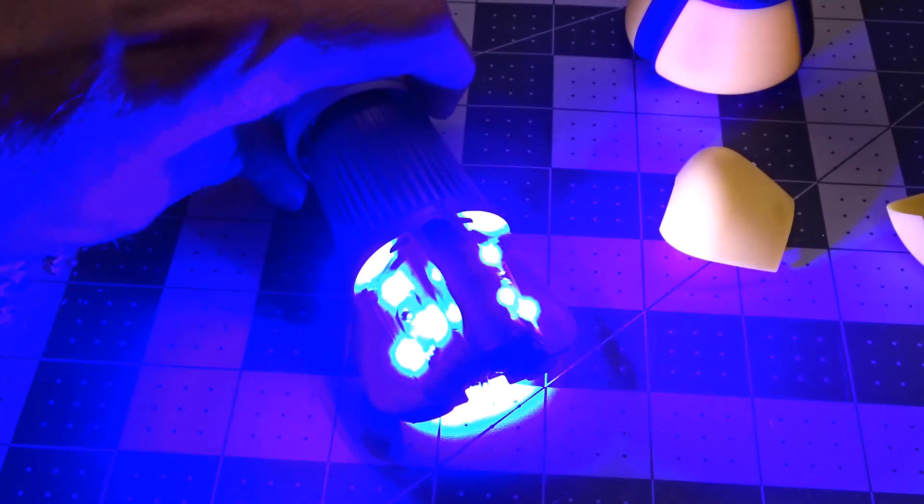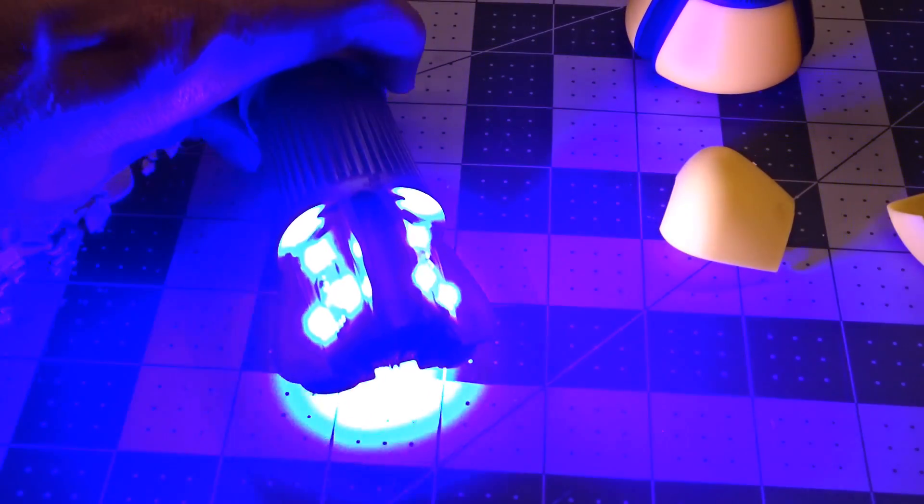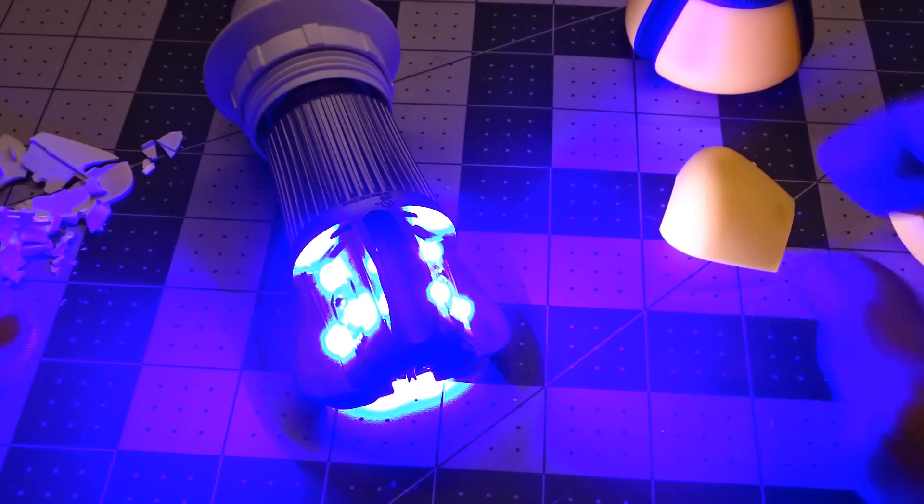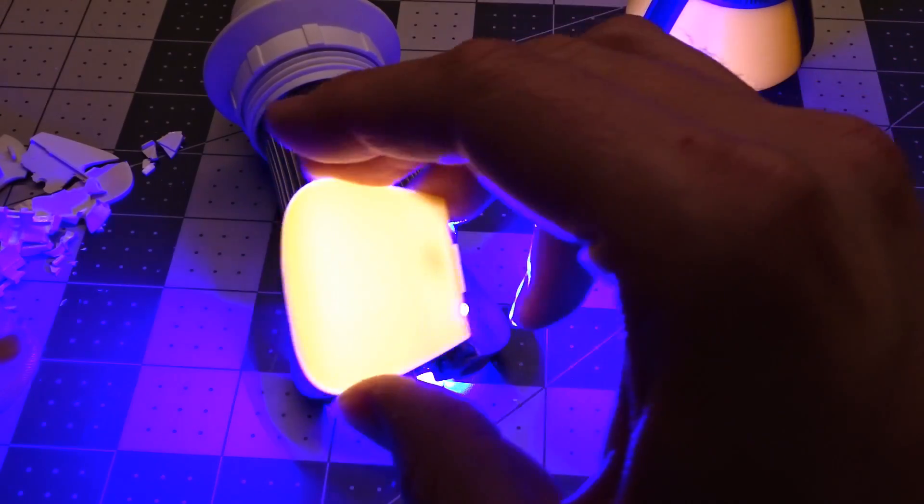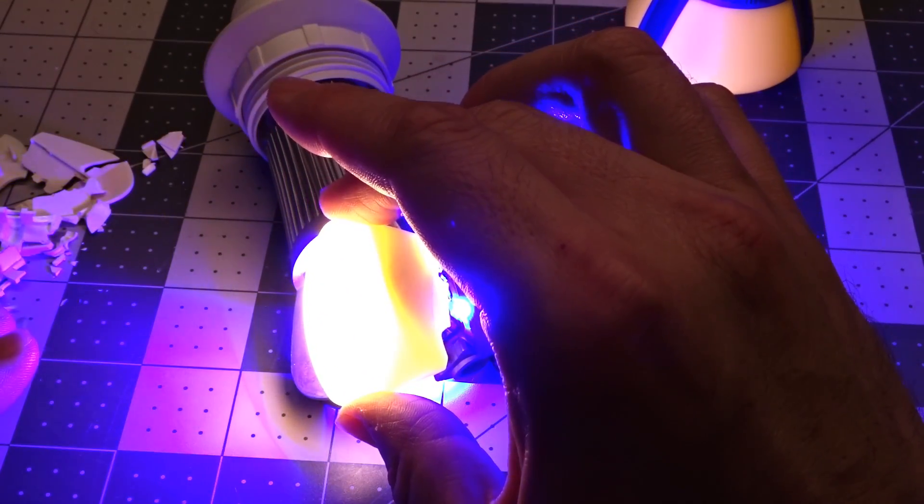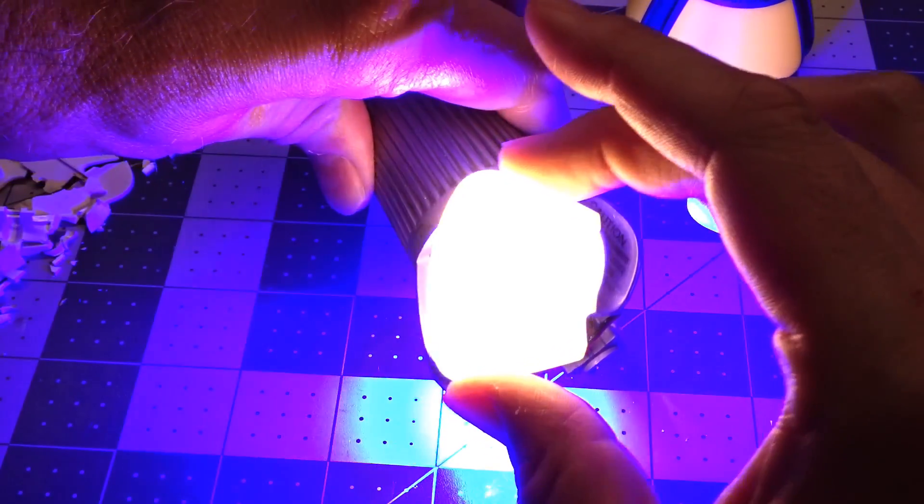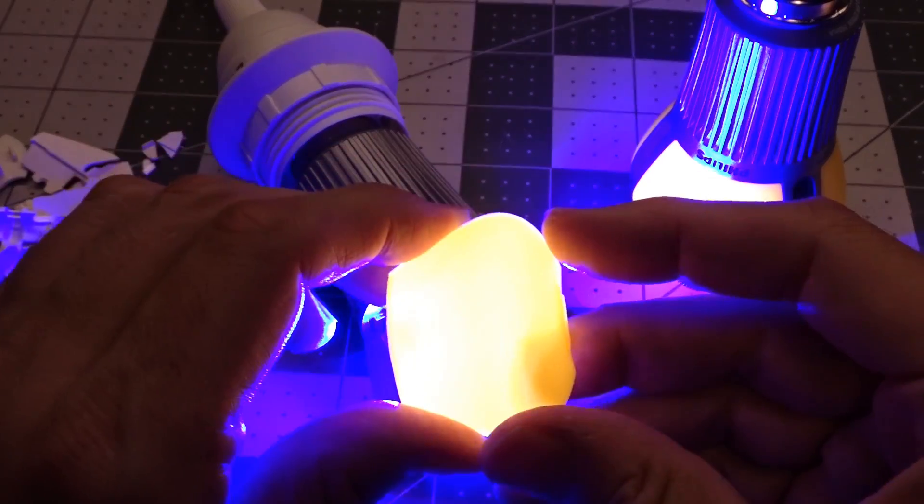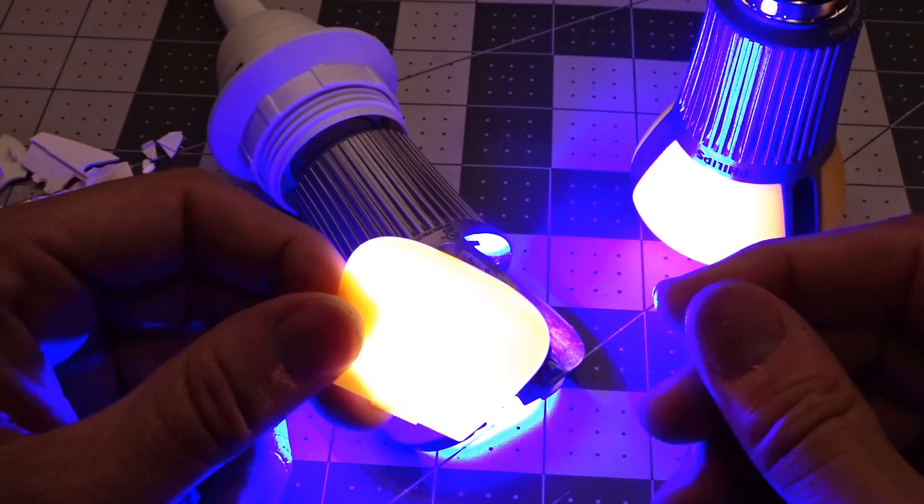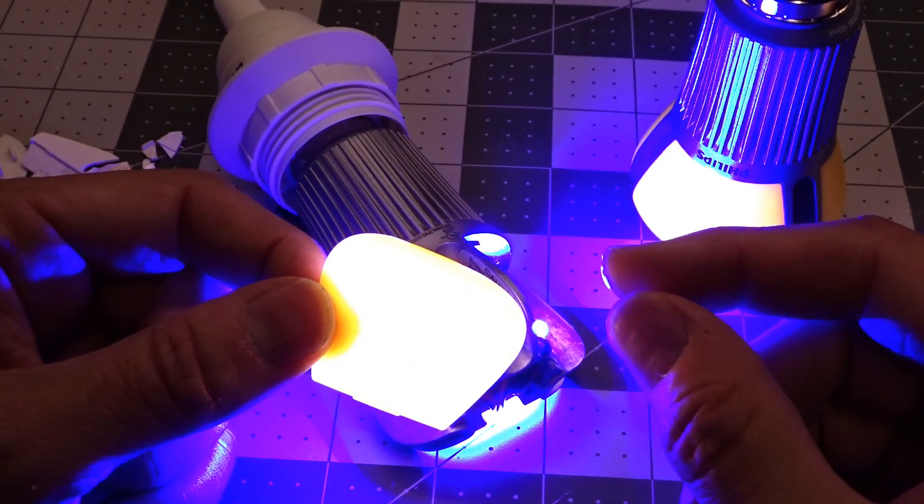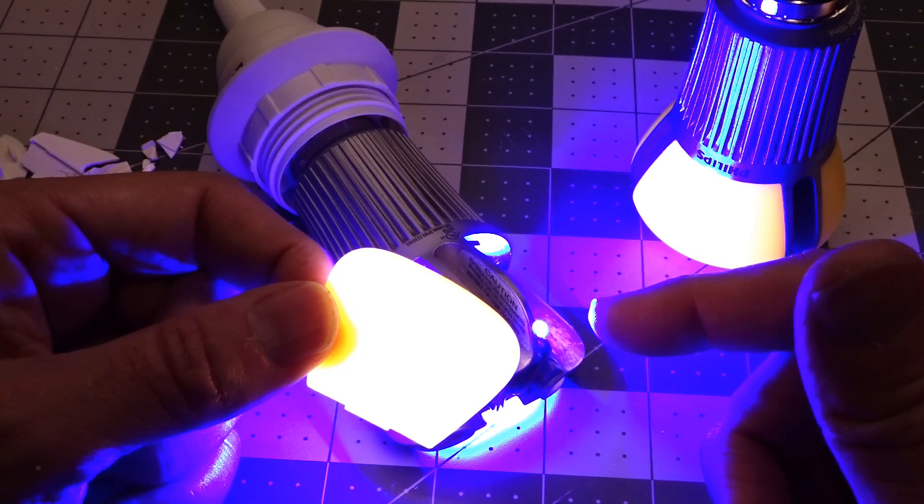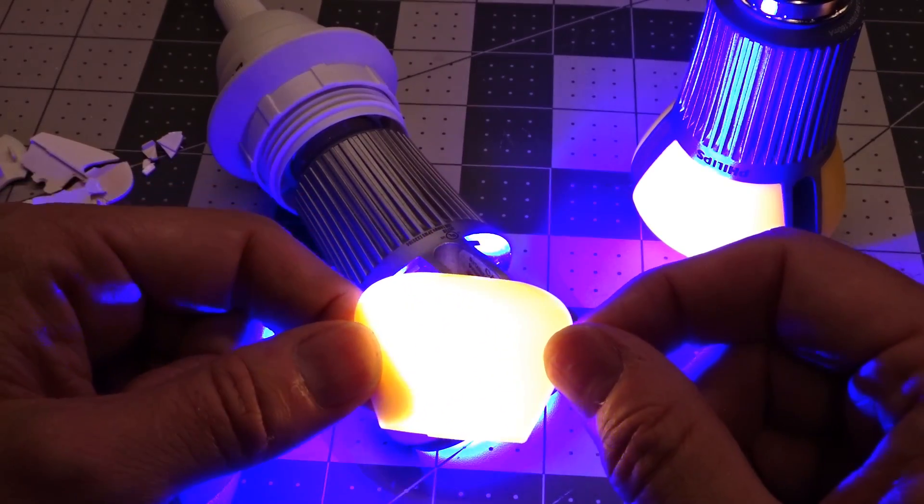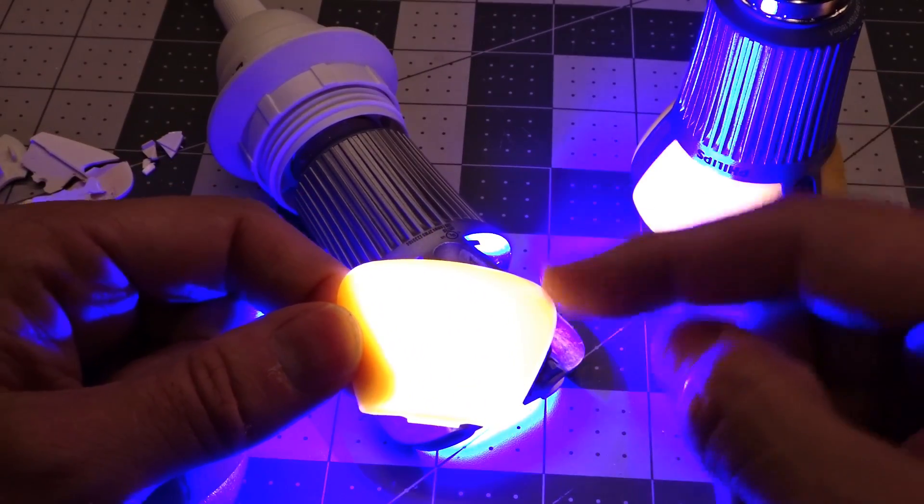Watch when I power this up what happens. The light that this is putting out is an extremely bright blue light, and these covers when you cover this actually change the blue light into white light. What this is called is remote phosphor.